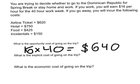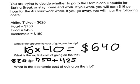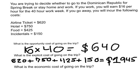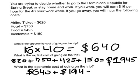The explicit costs are the costs incurred: the airline ticket, the hotel charge, the food charge, and the incidentals — giving you an explicit cost of $1,945. The economic cost is the explicit cost and the opportunity cost combined. Our opportunity cost is $640, our explicit cost is $1,945, and the sum gives you an economic cost of $2,585.